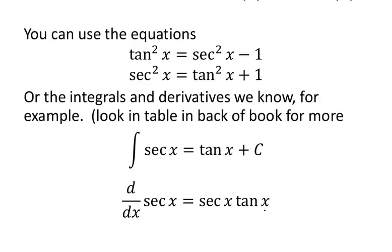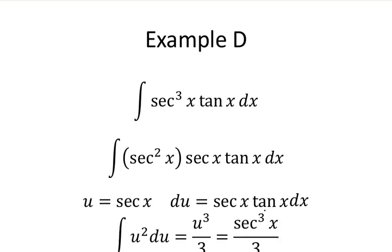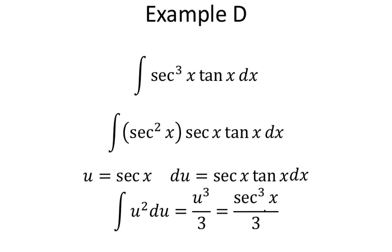Here's an example: the integral of secant cubed of x times tangent of x. We take secant cubed and split it into secant squared times secant. Making the substitution u equals secant of x, du equals secant times tangent, we end up with u squared du, which integrates to u cubed over 3. Don't forget to unsubstitute and turn it back into secant.